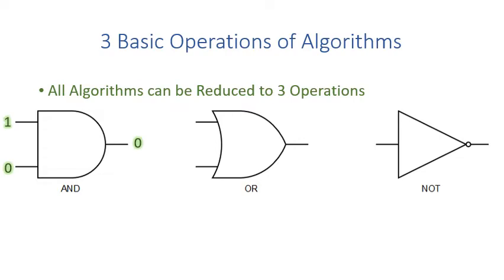The second operation is OR. OR means the output will be 1 if one of the inputs is 1 — either the first input or second input being 1 gives output 1. The third fundamental operation is the simplest one: you just invert the input. So if the input is 1, the output is 0, and if the input is 0, the output is 1.